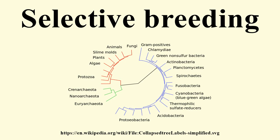Charles Darwin discussed how selective breeding had been successful in producing change over time in his book. The first chapter discusses selective breeding and domestication of such animals as pigeons, cats, cattle, and dogs. Selective breeding was used by Darwin as a springboard to introduce the theory of natural selection, and to support it.